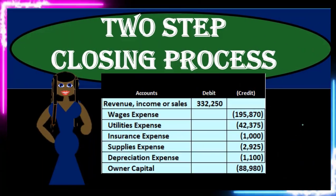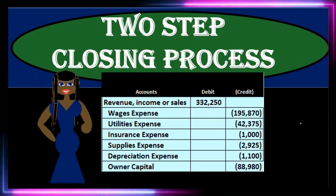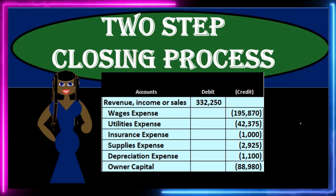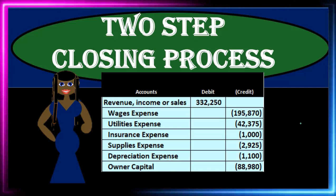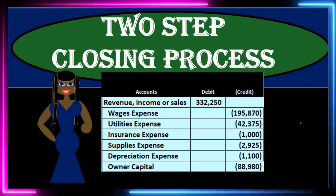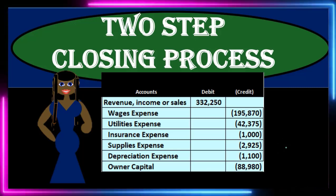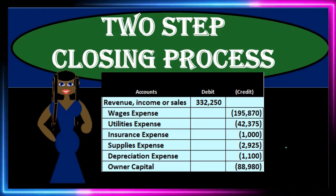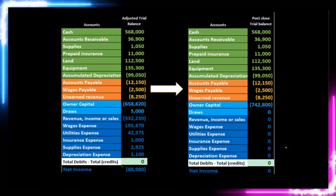In this presentation we will take a look at a two-step closing process — in other words, we will perform the closing process using two journal entries. There are a couple of different ways we can see the closing process, each having pros and cons. The two-step process is nice because it allows us to see net income broken out and closed directly to the capital account, followed by draws, which is similar to what we see when we do the statement of owner's equity.